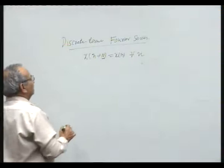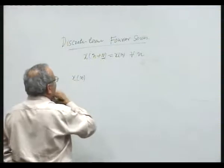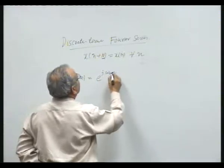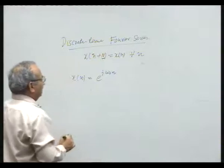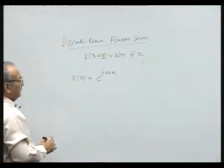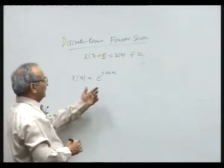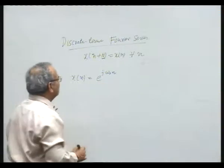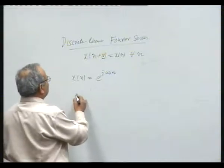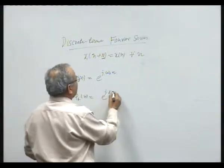Let us have a complex exponential function x[n] = e^(jω₀n). If this is periodic with period capital N, then we can form a set of complex exponential signals that are harmonically related — a set of complex exponentials given by φ_k[n] = e^(jkω₀n).